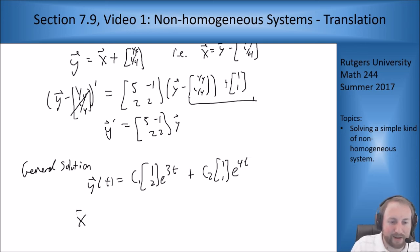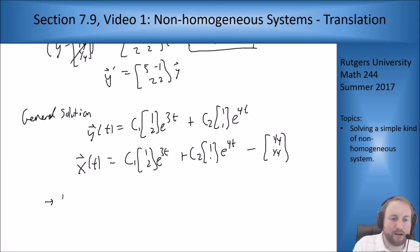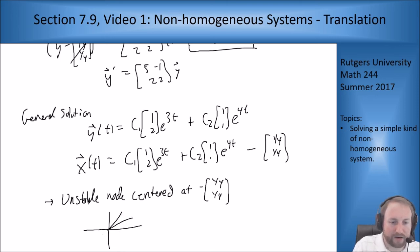So then what is x? Then x(t) is going to be c₁[1; 2]e^(3t) + c₂[1; 1]e^(4t) minus [1/4; 1/4]. So what is this? This is an unstable node centered at [-1/4; -1/4]. For your normal unstable node centered at zero, you've got eigenvectors and curves that go outward.